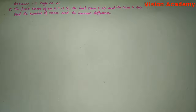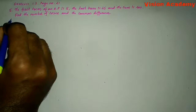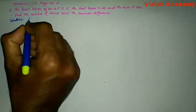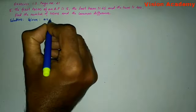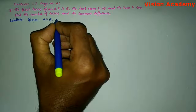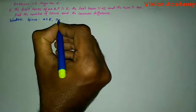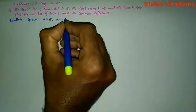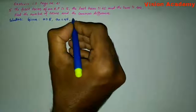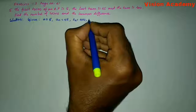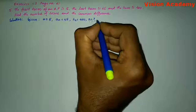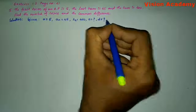The first term of an AP is 5, the last term is 45, and the sum is 400. Find the number of terms and the common difference. Let us find the solution. Given: first term A is 5, nth term An is 45, and Sn is 400. We need to find n (number of terms) and D (common difference).